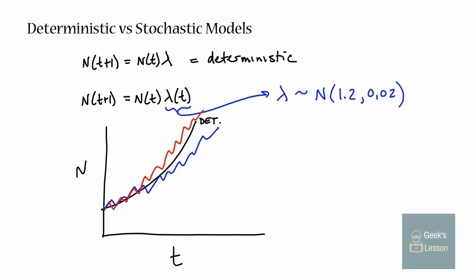But in any stochastic model, even if the variance is small, it's always possible for weird things to happen, like population extinction. You just might get a bad run. Or you might get a huge population explosion - a fairly unlikely event, but still possible.